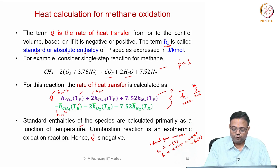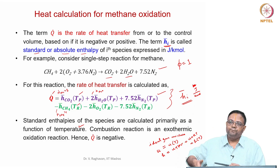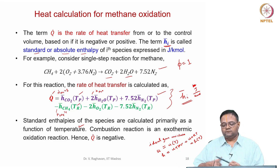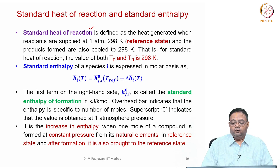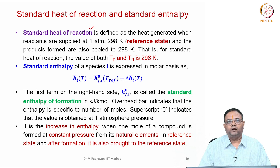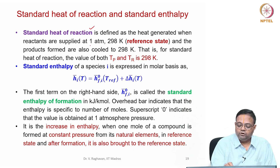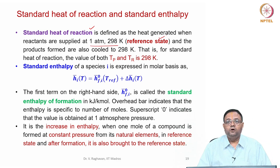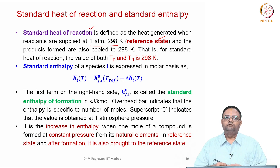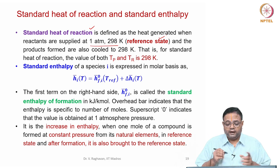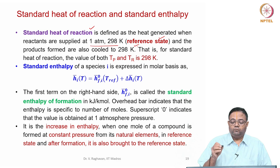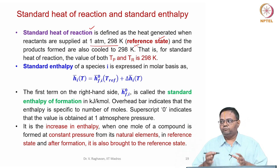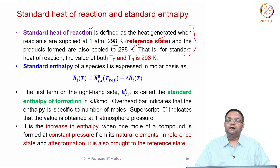Standard enthalpies are found as a function of temperature, allowing us to find Q. Q is negative because heat is rejected from the combustion chamber to the surroundings. The standard heat of reaction is defined as the heat generated when reactants are supplied at 1 atmosphere and 298 K (the reference state), and the products are cooled back to 298 K. This means Tp = TR = 298 K, and we are extracting the maximum possible heat from the chamber.